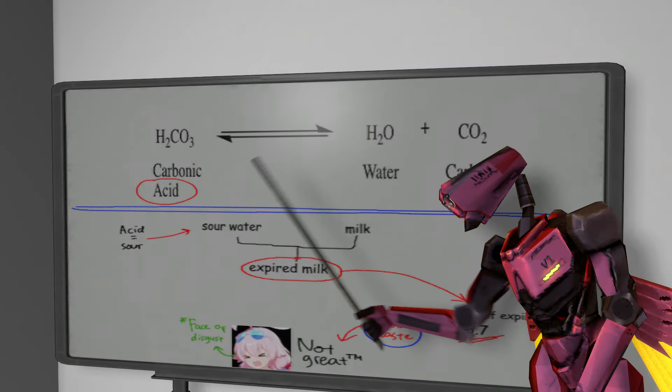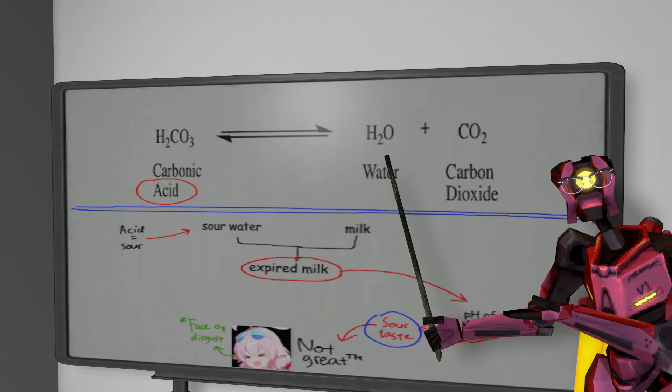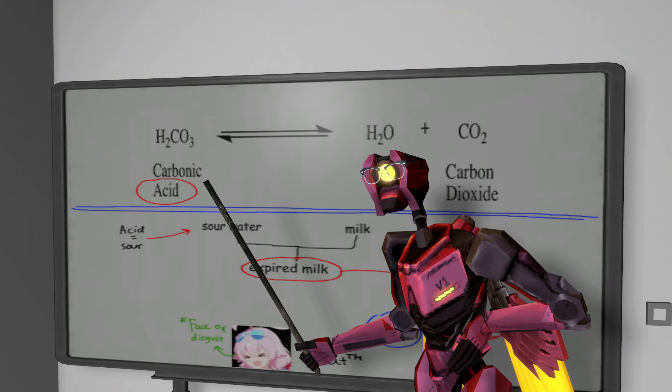The fizz comes from carbonic acid in the water, splitting up into CO2 and H2O over time. The carbonic acid is, as an acid, sour.